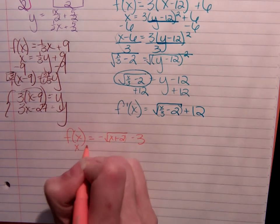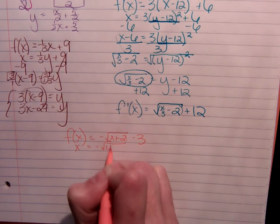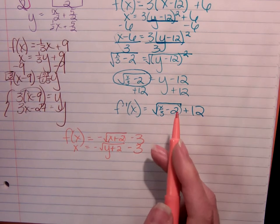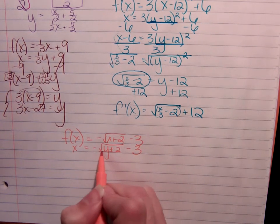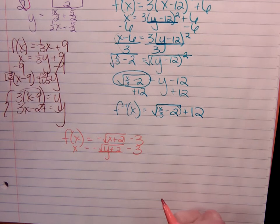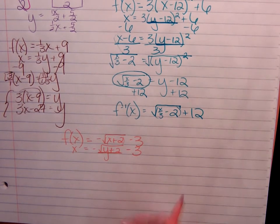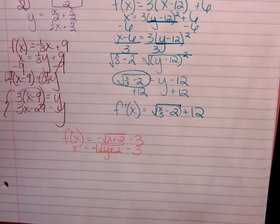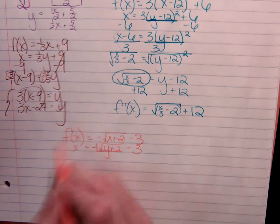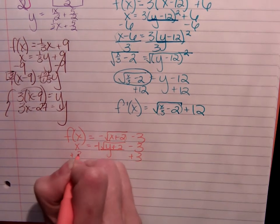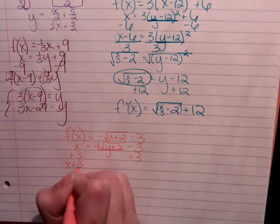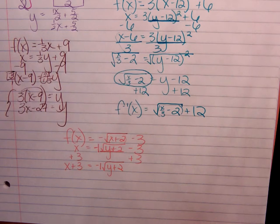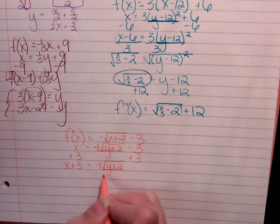Rewrite. x is equal to negative square root of y plus 2 minus 3. And just like we did with the quadratic example, we're going to treat this radical part as its own entity for a little while. Get rid of everything on the outside of it. It may help to put the 1 here because that's negative 1 times all of that. And we'll isolate like normal. Add 3. x plus 3 is equal to negative 1 times the square root of y plus 2. Still treating this as its own. Divide by the negative 1.